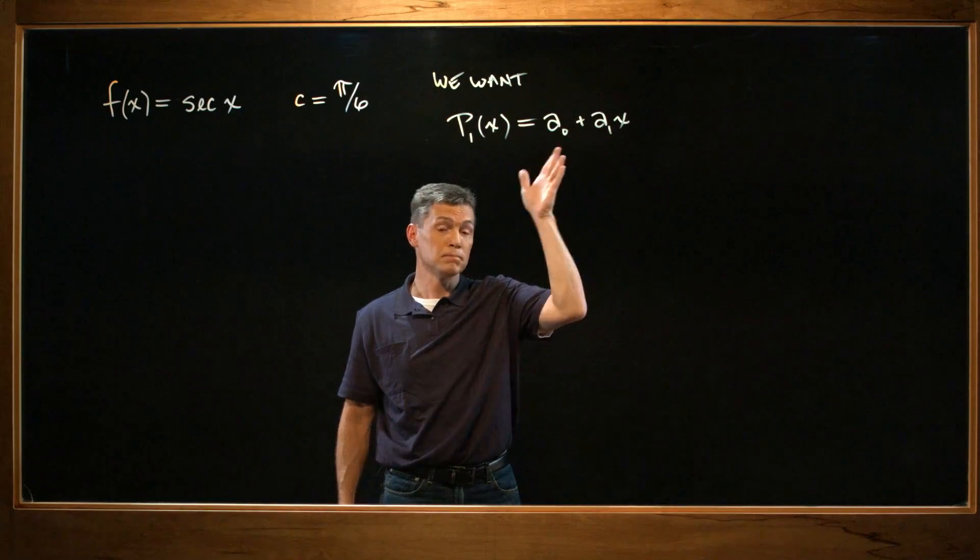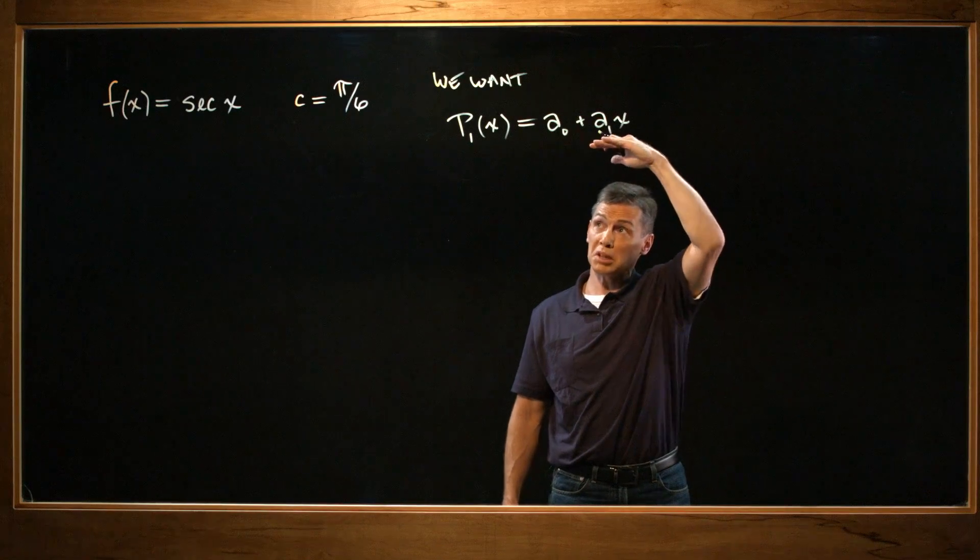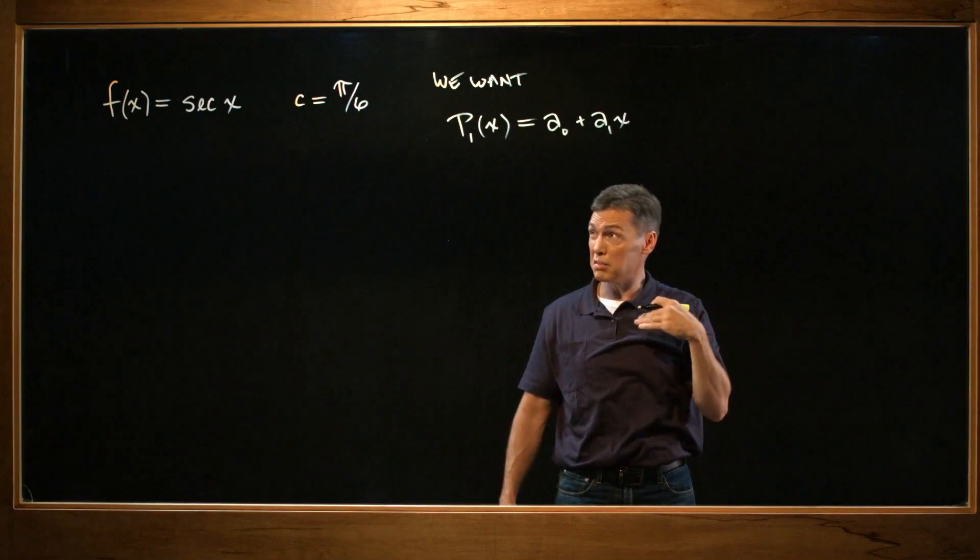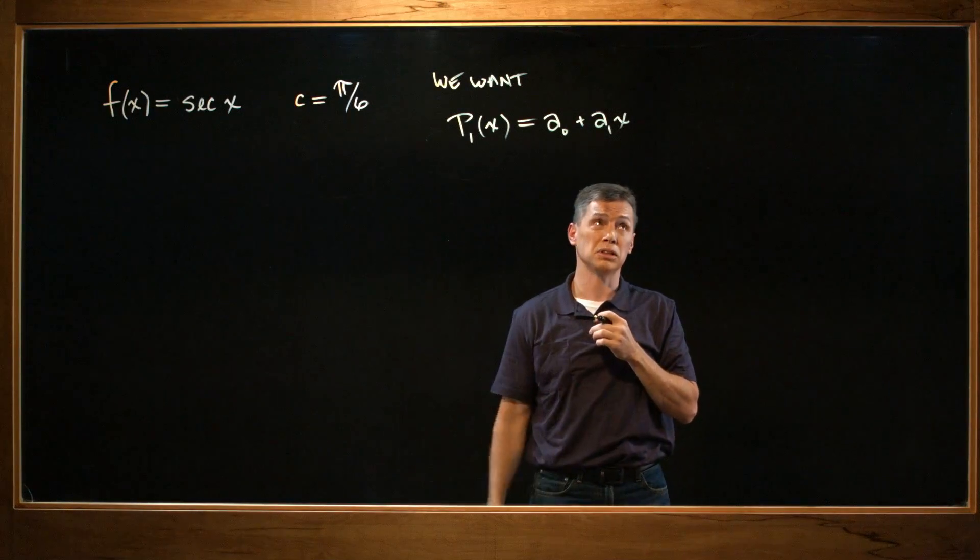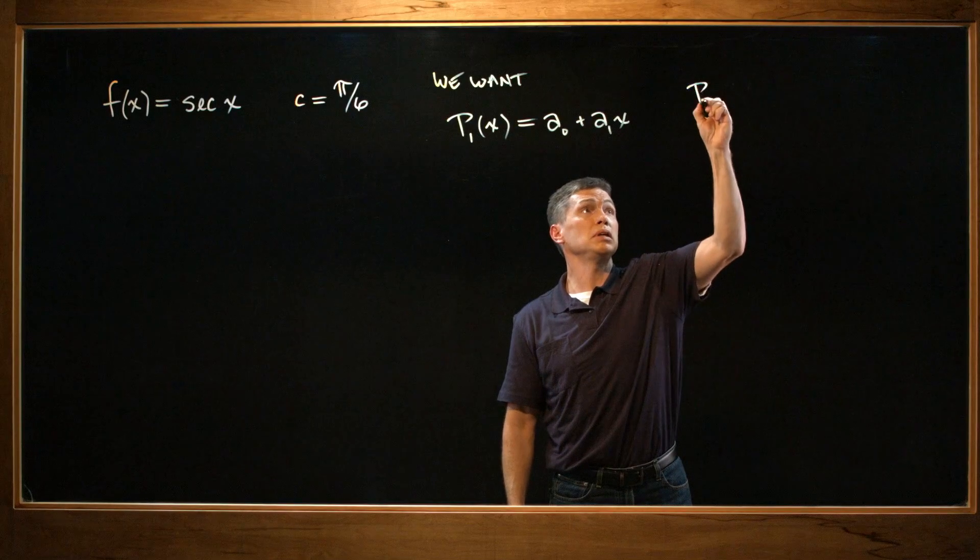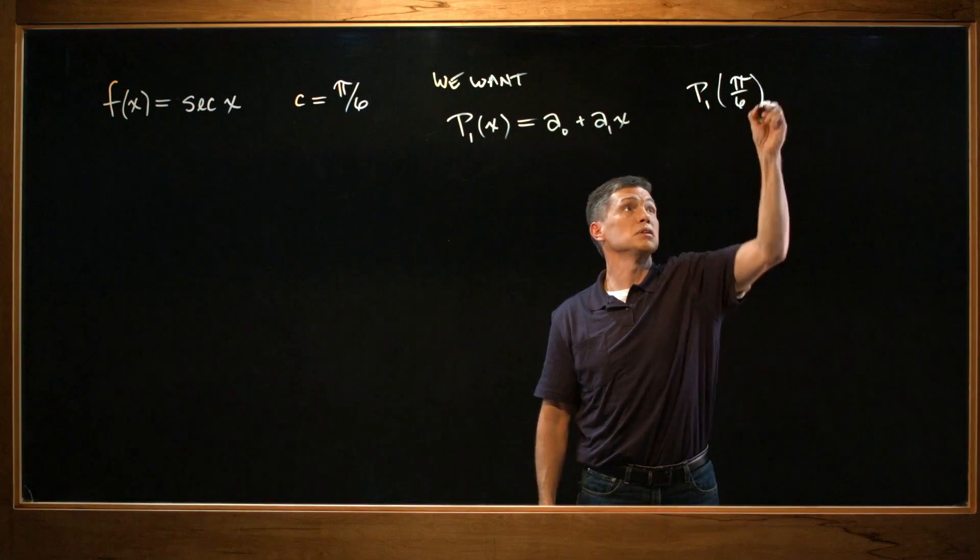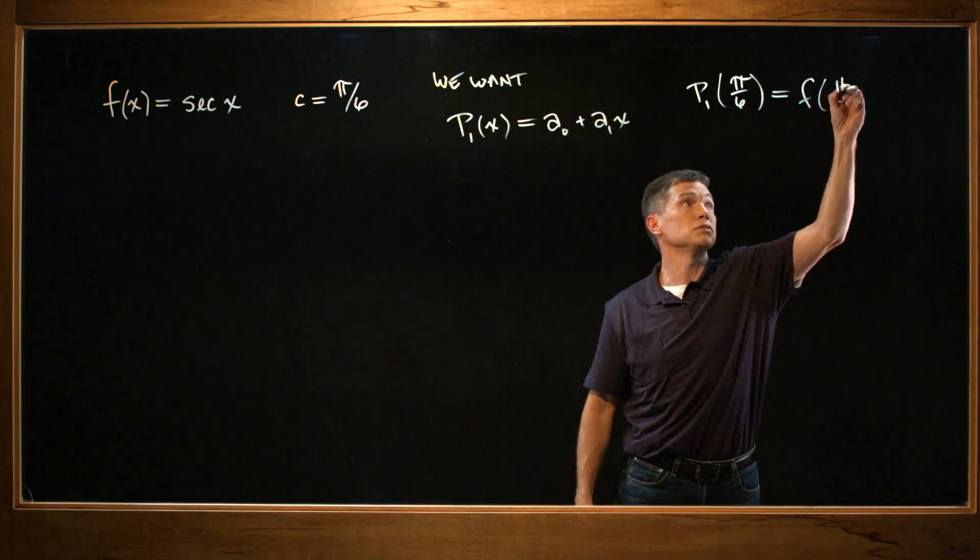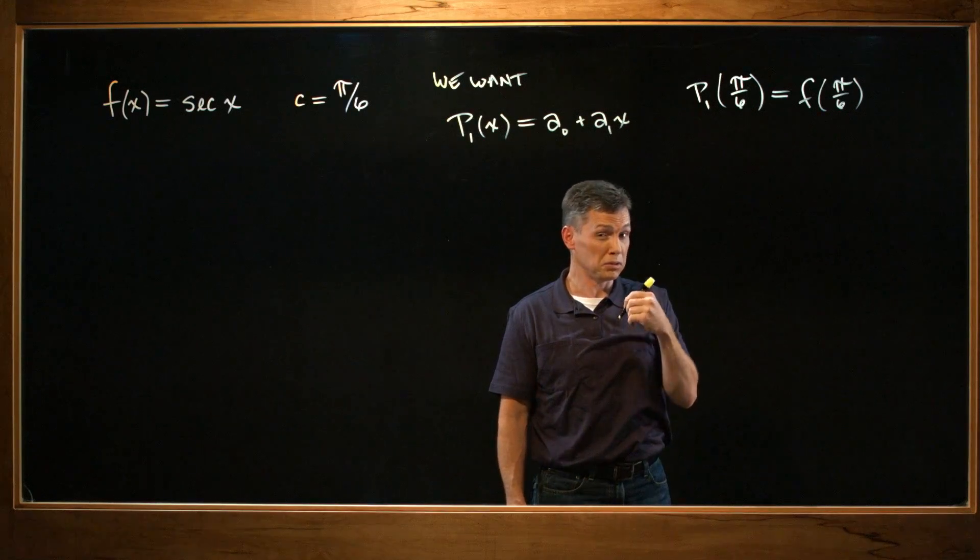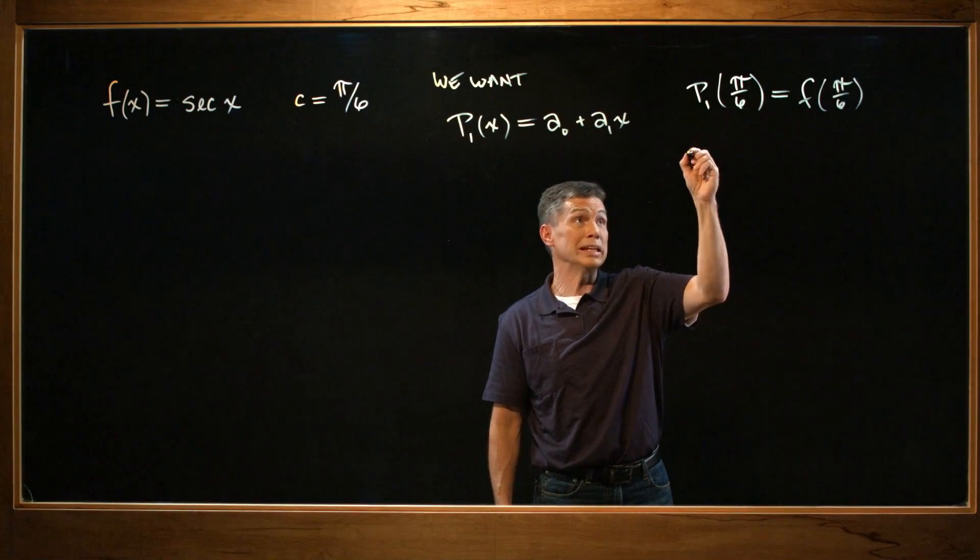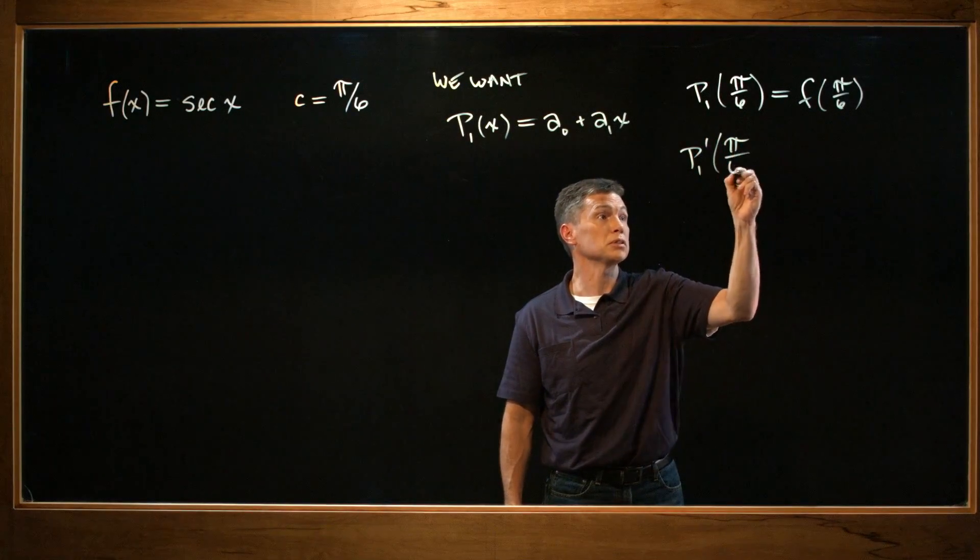So first degree polynomial, because x is to the 1 power, and realize what I'm trying to set myself up for then is our ultimate answers will be the specific values for a₀ and a₁. If I get values there, I've got my function. Now the conditions they gave us, the function we're going to come up with is supposed to have the same value as the given function at that value of c, π/6. So I'm interpreting that as P₁(π/6) is supposed to equal f(π/6).